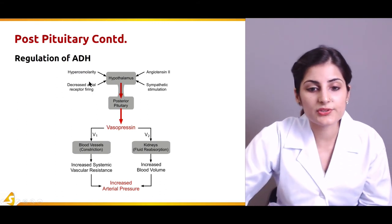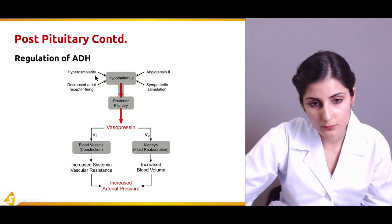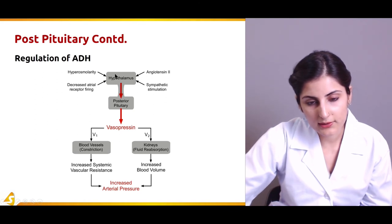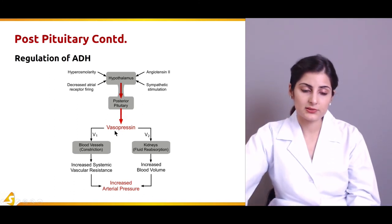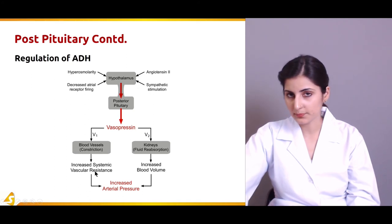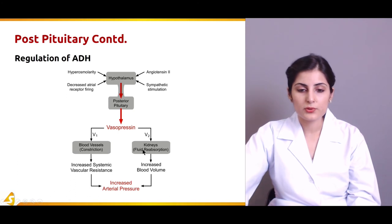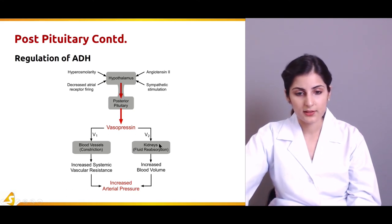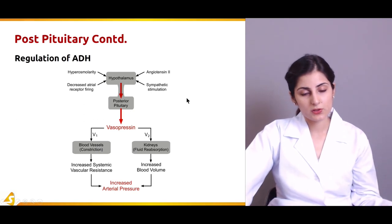The factors that stimulate vasopressin production include: hyperosmolarity — a concentrated environment with less water and more solute — decreased atrial receptor firing, and sympathetic stimulation. These all increase the production of vasopressin. The effects of vasopressin are: constriction of blood vessels, which increases resistance and raises arterial pressure, and fluid reabsorption, which increases blood volume and in turn raises arterial blood pressure. Vasopressin has two types of receptors: V1 receptors in blood vessels and V2 receptors in kidneys.